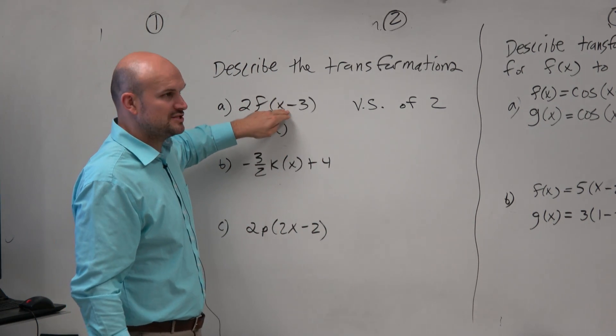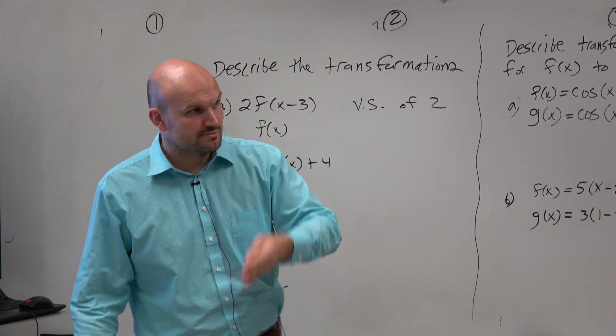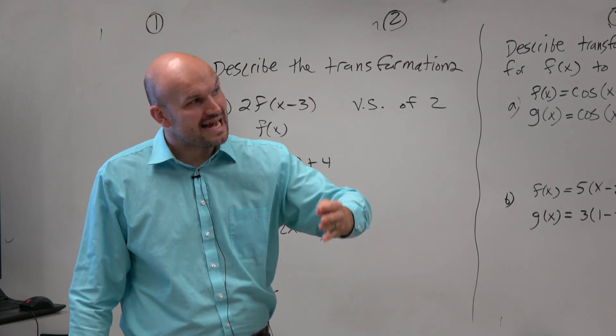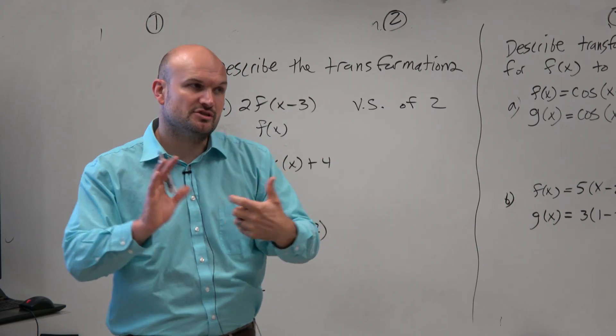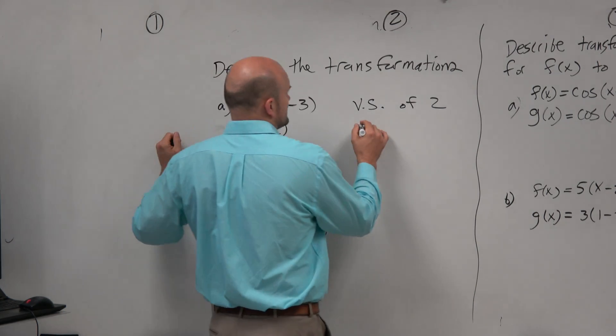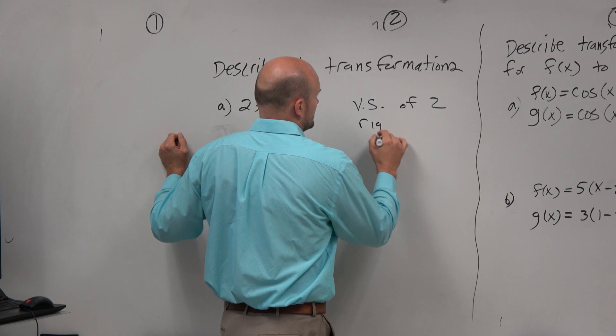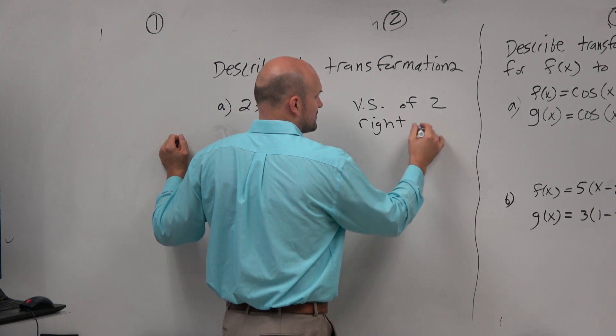And then we have the x minus 3. We know that when we're subtracting inside of a function — the x minus 3 — that's going to shift the graph 3 units to the right. So I'll just use shorthand: right 3.